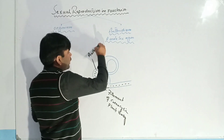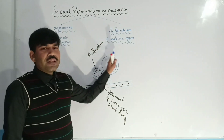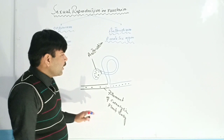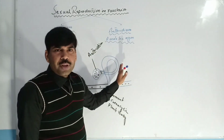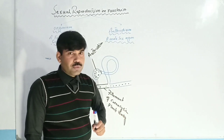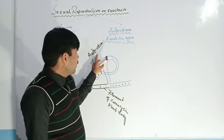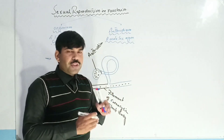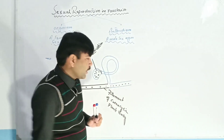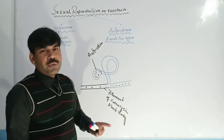The antheridium is a hook-like structure formed on a short branch of Vaucheria. After the development of the antheridium, development of the female structure, the oogonium, begins. This means that the antheridium develops first, and after its maturation, development of the oogonium is started.